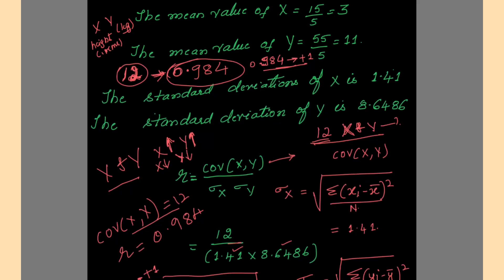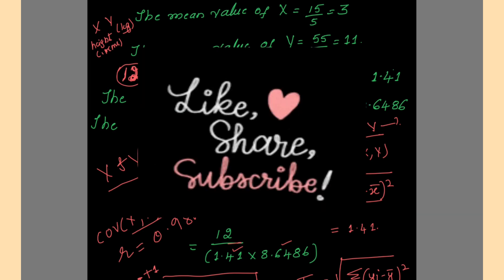So this is the importance of the two statistical measures — covariance and correlation coefficient — under bivariate statistics. That's it for this session. Hope you find this helpful. Please like, share and subscribe to my channel. Thank you, bye-bye and take care.